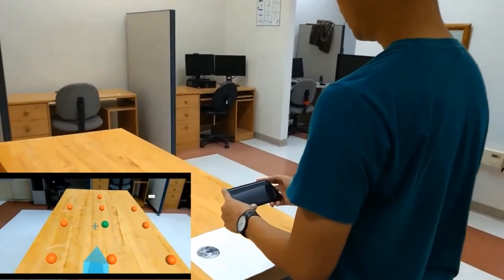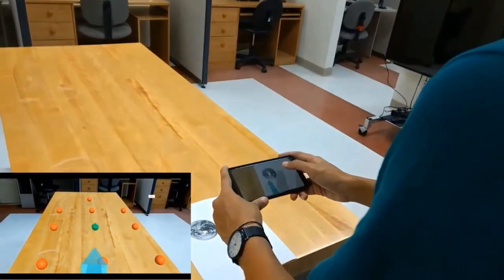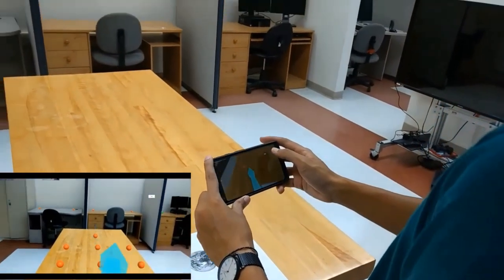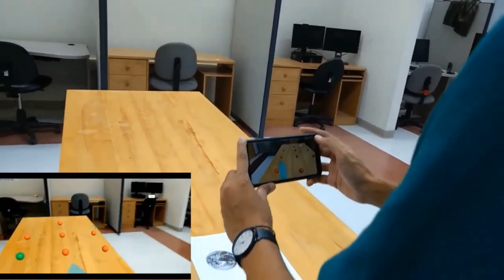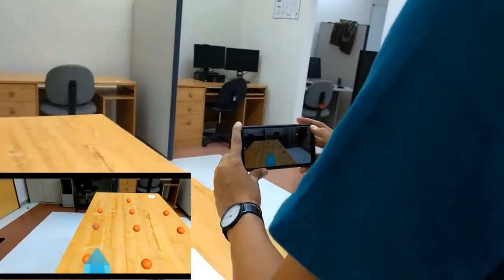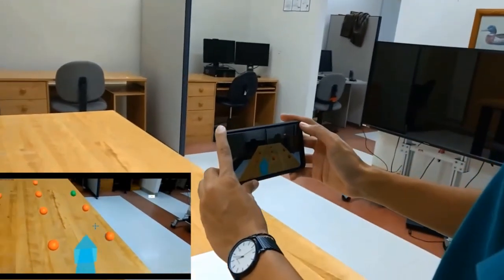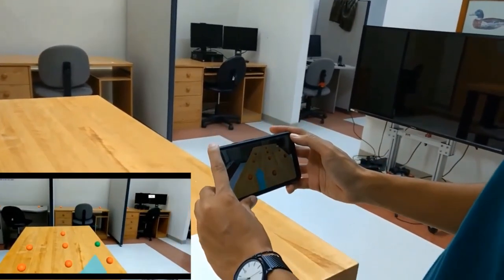So just a few more details about the study. All arrangements consisted of 15 or 16 targets, which were the orange spheres with a diameter of 10 centimeters. One of the spheres was randomly selected to be the target for each trial and was colored green. You also see a blue arrow at the bottom of the screen that guides the participant to the location of the next target, since the targets could be located off screen.